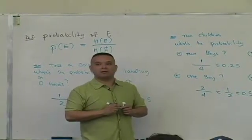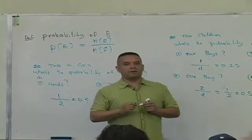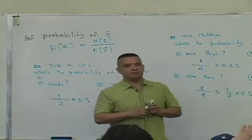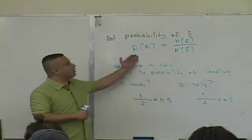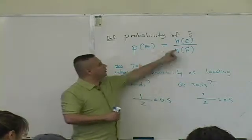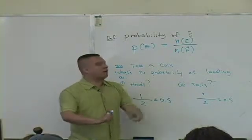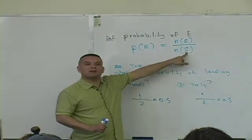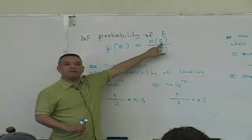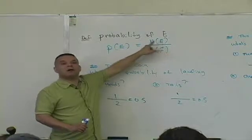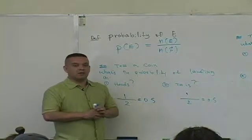Anybody have any questions on what we just did? If they ask you a probability question, you're going to use your definition. You need to know what the experiment is — they're telling you the experiment. You're going to have to deduce the sample space, and more importantly, how many outcomes are in that sample space. Then for the given event, you're going to have to determine how many outcomes are in that event and count them. So you're doing this process — it's a fraction.